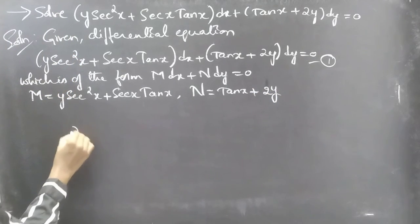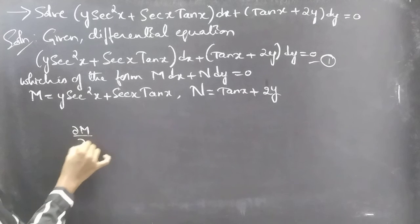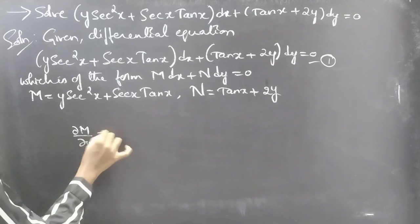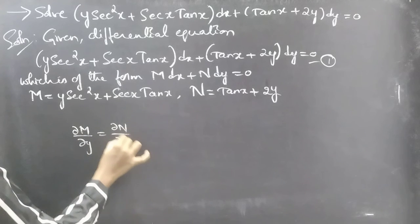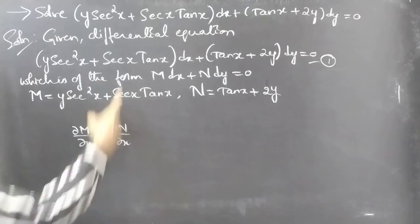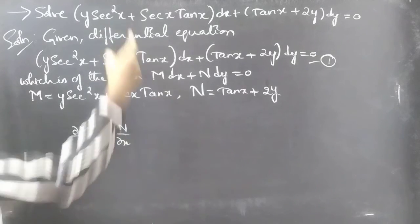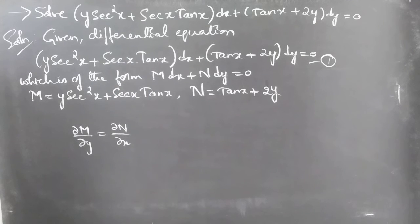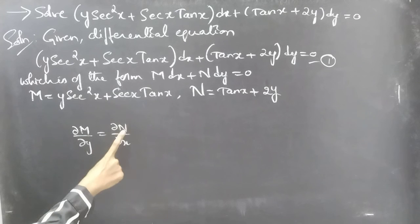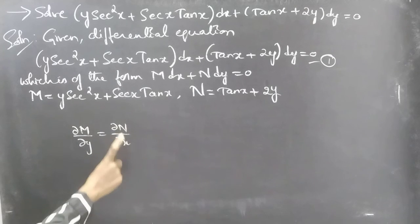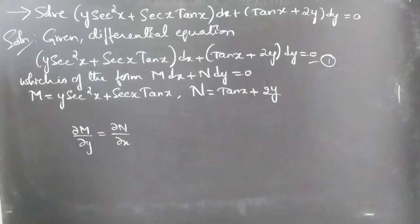If the partial derivative of M with respect to y equals the partial derivative of N with respect to x, then we can say that the given differential equation is an exact equation. So let's now find these two partial derivatives.